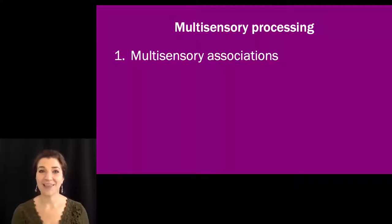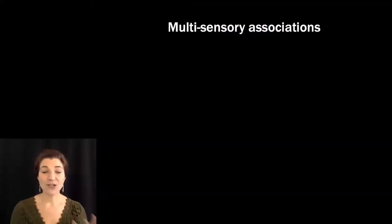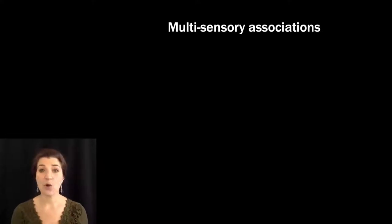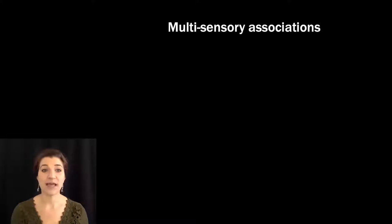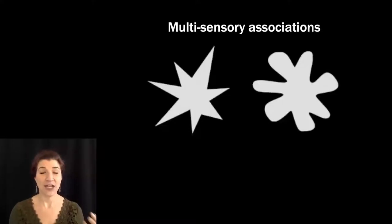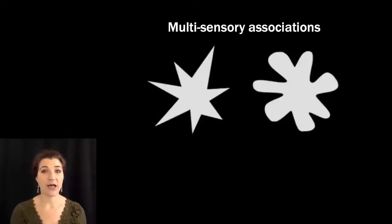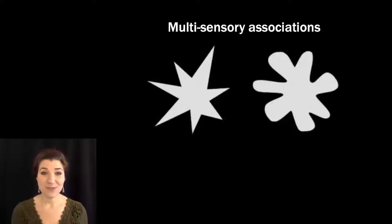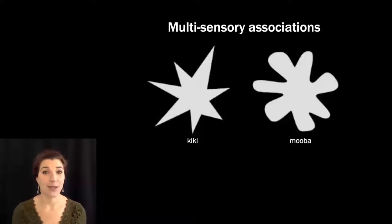So let's start with a thought experiment. While traveling, you find yourself in a part of the world where you don't speak the language and you have no guidebook or dictionary. You meet some friendly people and they try to teach you their language. They point to some objects and tell you their names, but you weren't quite paying attention and didn't catch which is which. You know that one of these objects is called a mooba and one is called a kiki. Which one is which?